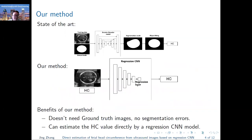Different from the above mentioned methods, our method is to estimate the HC value directly by proposing a regression CNN model. The idea is learning the features of fetus head images by a CNN module. Then through the HC value reference and the linear regression function at the last layer of the network, we can predict the HC value directly. Moreover, we don't need ground truth segmentation images, so there are no segmentation errors.